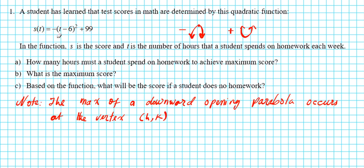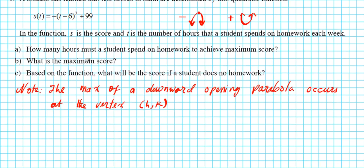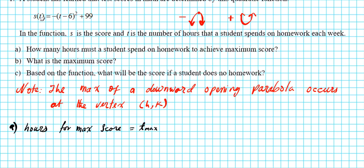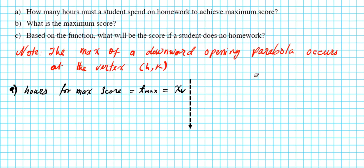The parabola is in vertex form, as is the case here. The question asks how many hours a student must spend on homework to achieve a maximum score — the amount of hours is a unit of time. Let's call it t-max: the input value that yields the highest output. In this function, the independent variable is t and the dependent variable is s. T-max is basically the x-coordinate of the vertex.